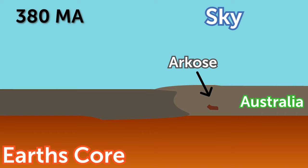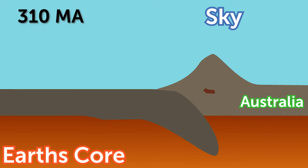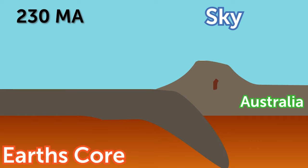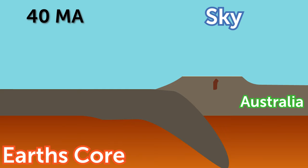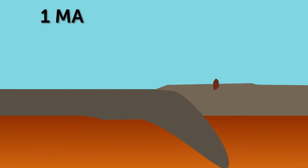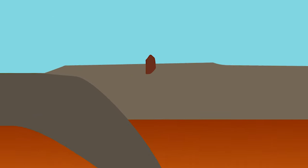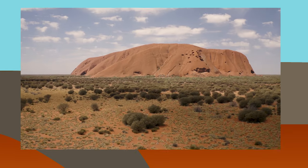Around 130 million years after the initial mountain building event, a second one shoved the sandstone layers to the surface again, flipping the now hardened archos 90 degrees in the process. This flipping made the rock stretch multiple kilometers vertically. Another hundreds of millions of years of erosion removed the softer rock around the hardened sandstone layer, which finally led to the uncovering of this magnificent rock structure which we now call Uluru.